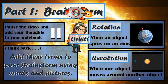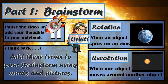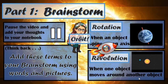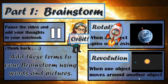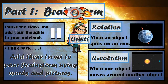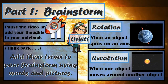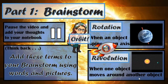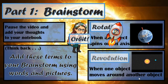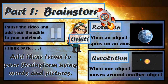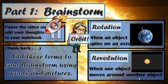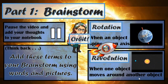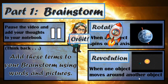I would like for you to add these terms to part one brainstorm in your notebook. Please pause the video and add these three terms: orbit, rotation, and revolution. Please use color, pictures, and words to do this. Pause the video now.